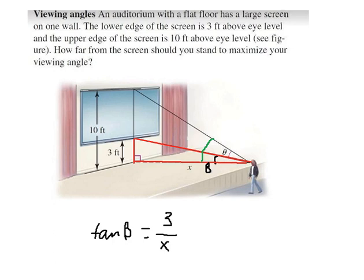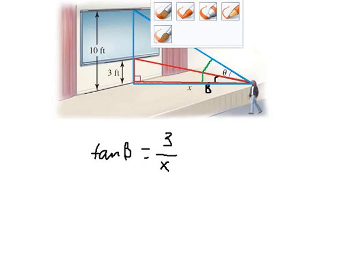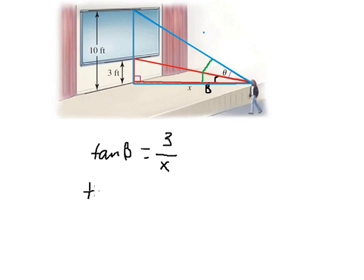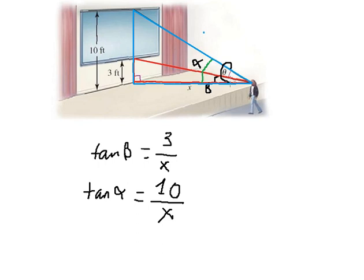Now the next triangle — this is the blue one with the green angle. We want to find theta, so we need to find the green angle. We have s and number 10, so we put the green angle as alpha. That is opposite over adjacent: number 10 divided by s.